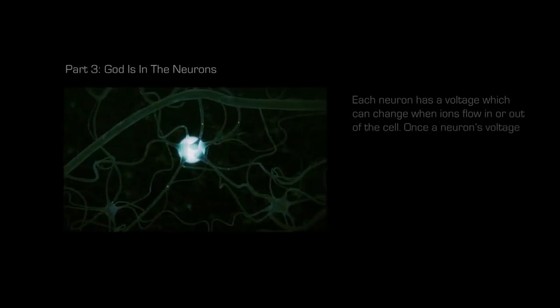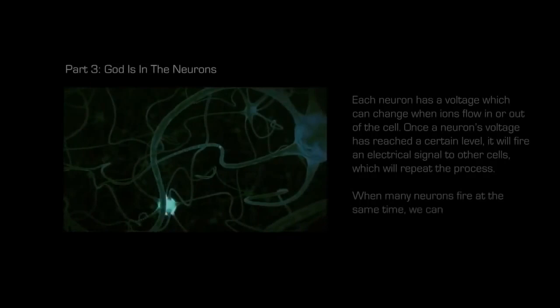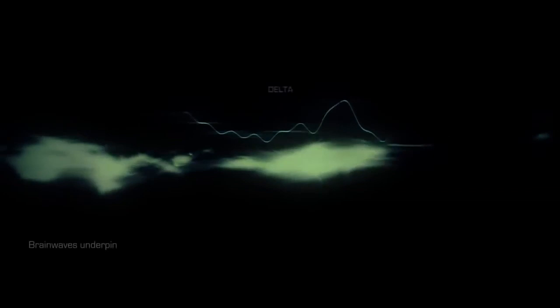Each neuron has a voltage, which can change when ions flow in or out of the cell. Once a neuron's voltage has reached a certain level, it will fire an electrical signal to other cells, which will repeat the process. When many neurons fire at the same time, we can measure these changes in the form of a wave.